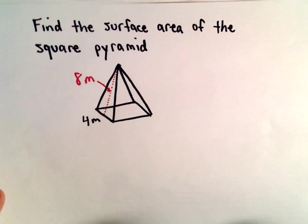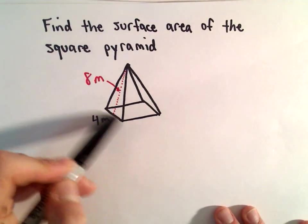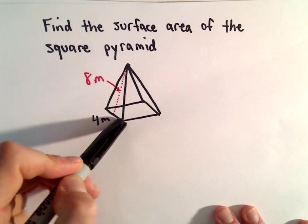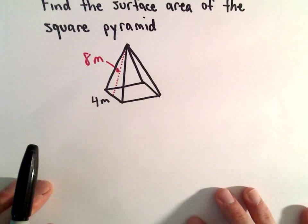We're going to find the surface area of a square pyramid. The base has one length of 4 meters. Since it's a square, all sides are 4 meters, and it has a slant height of 8 meters.